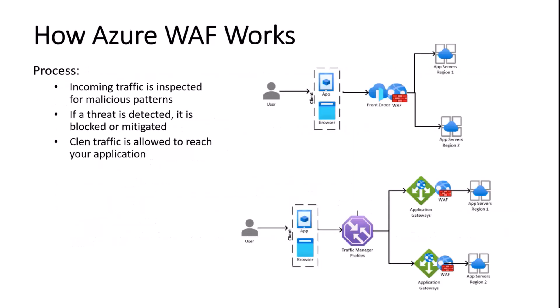Here is a high-level example of how it works. Looking at the right-side diagram, there are two diagrams — top and bottom. The top diagram is the global load balancer — that's Front Door. It runs everywhere. So if you run a WAF on Front Door, you can have servers in US East and Germany, but a request coming from Australia will most likely land in the US region.